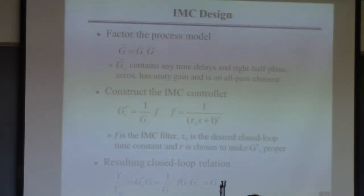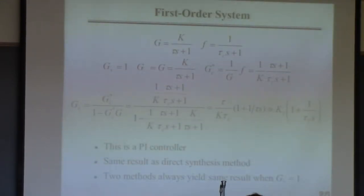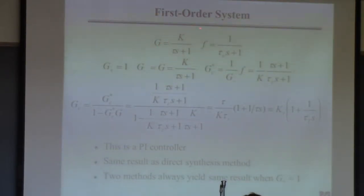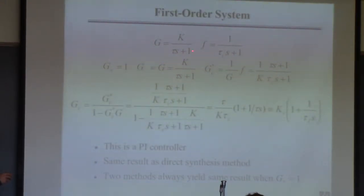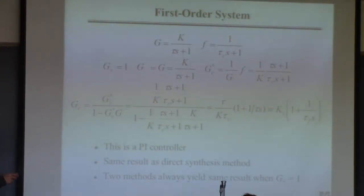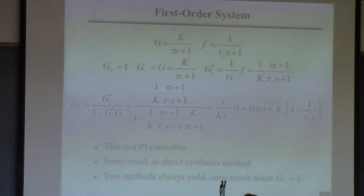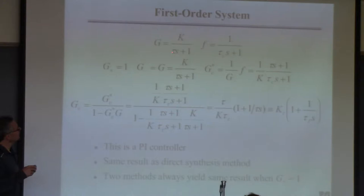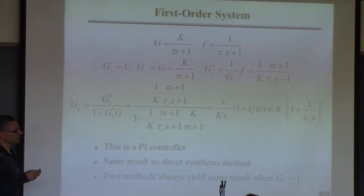This all sounds great except you don't know how to do it, so here are a couple of examples. This problem should look familiar because we did the exact same problem using the direct synthesis method. There's our transfer function for the process, there's our desired closed-loop response F — or equivalently GD — exactly what we did with the direct synthesis method. So this one is really simple. The first thing you'd always want to do is form the G_plus.